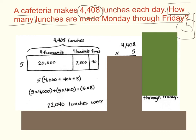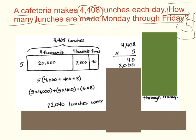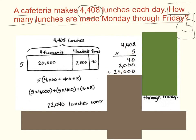Now let's look at this problem in partial products. 4,408 times 5. Start out in our ones place. 5 times 8 will give me a product of 40. You can see this is our 40 here. Next, move to our tens. 5 times 0 would be 0, so there's no need to write anything for our tens. Next, move to our hundreds. 5 times 4 hundreds would be 20 hundreds or 2,000. Here's our 2,000. And then finally, 5 times 4,000 would be 20,000. Now we have all of our partial products. Add those together to get our final product of 22,040.